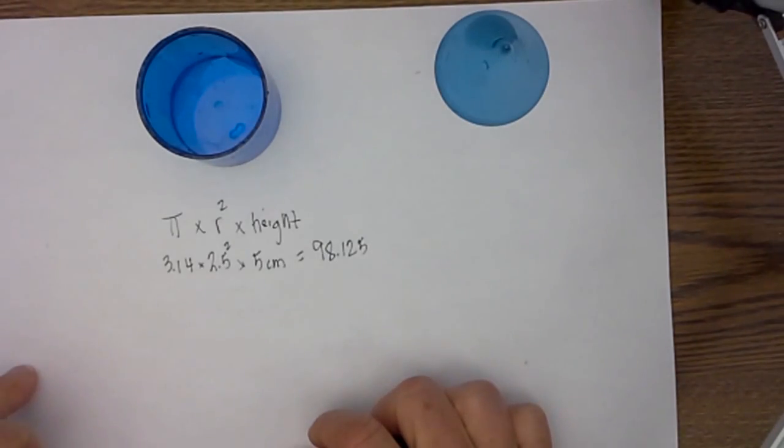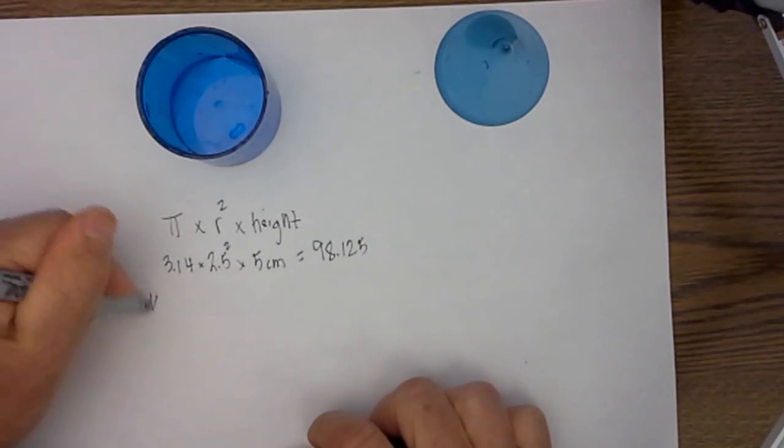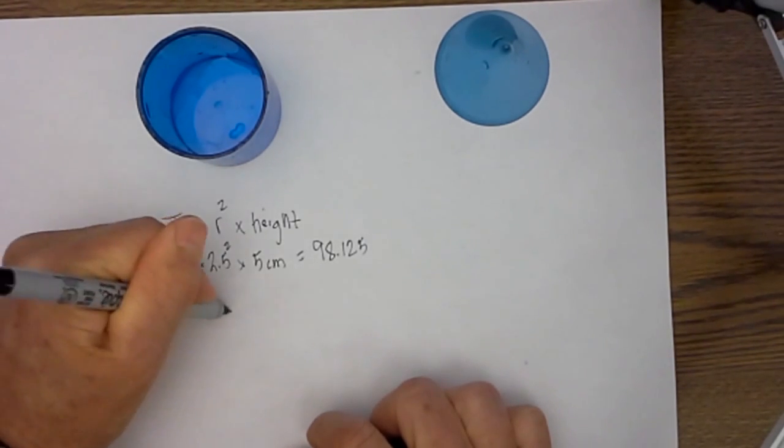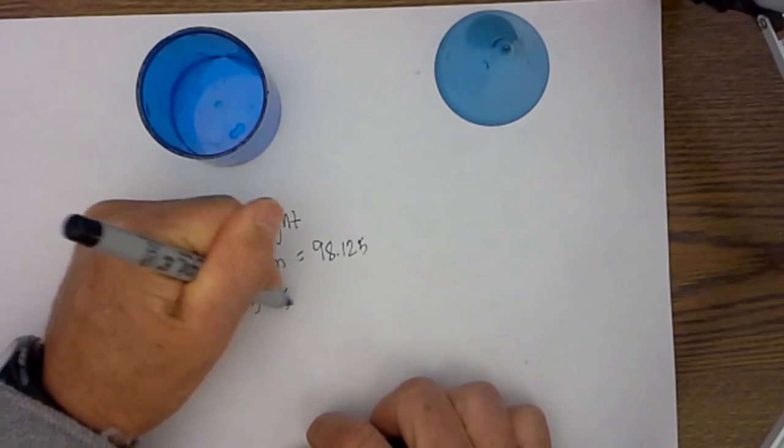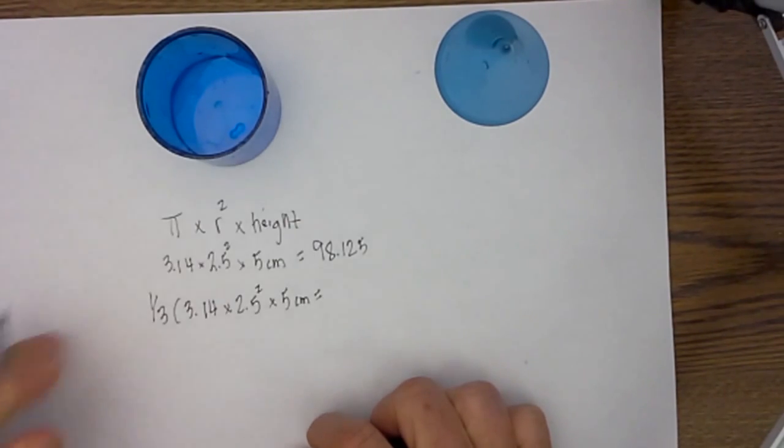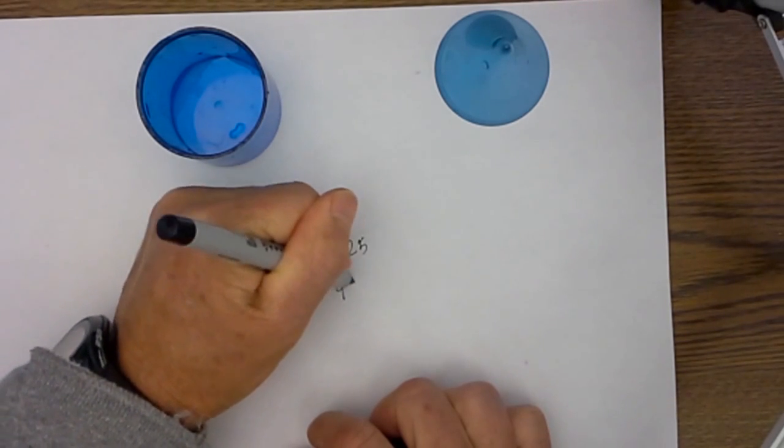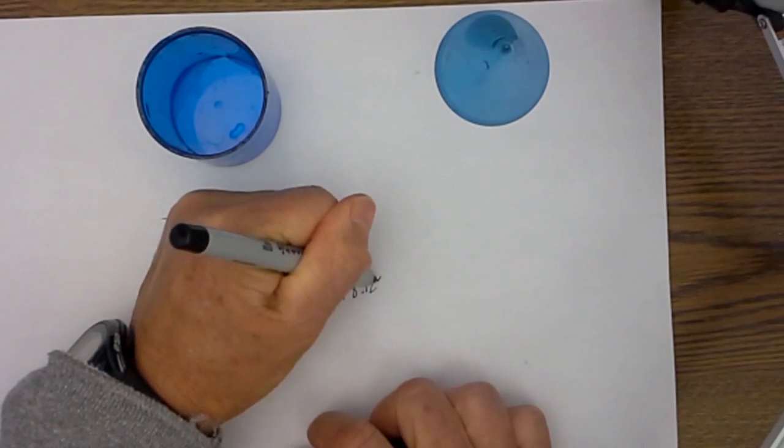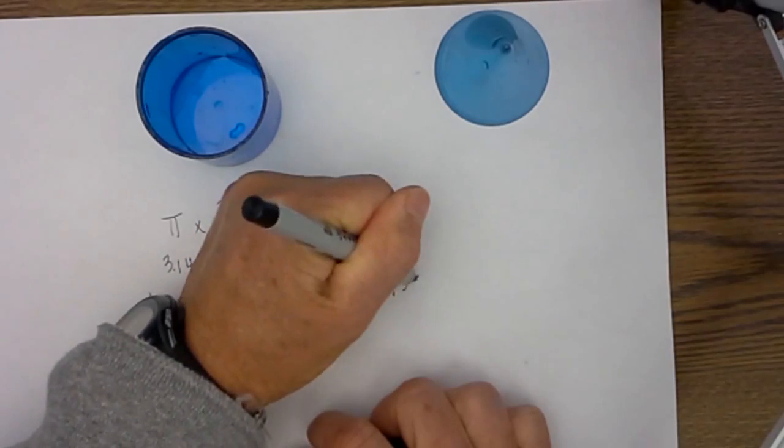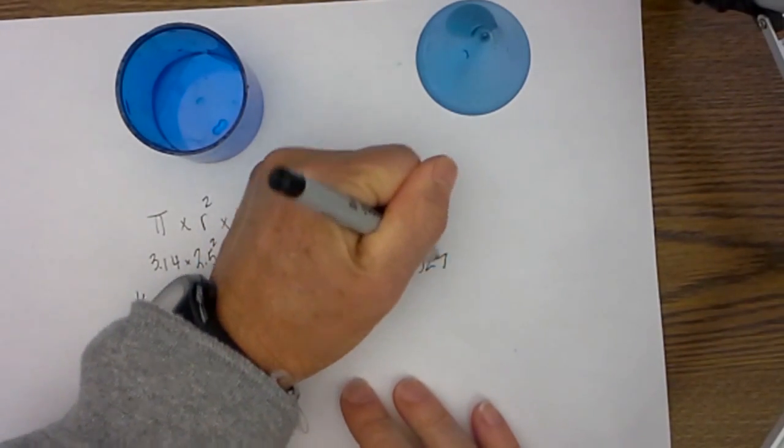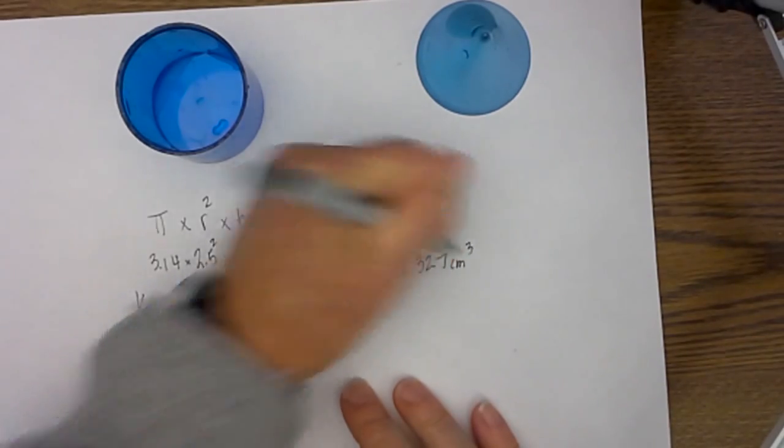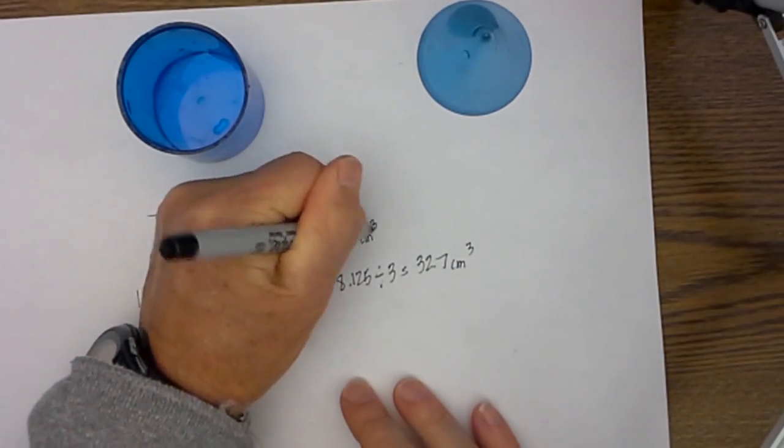Next for the cone I know that it has a similar base and a similar height. So I can take one third times 3.14 times 2.5 squared times 5 centimeters and that equals 98.125 divided by 3 which is equal to 32.7 centimeters cubed.